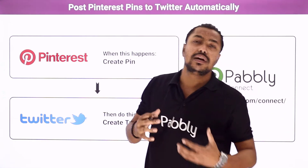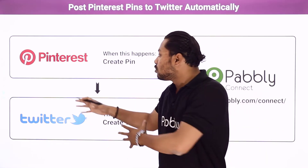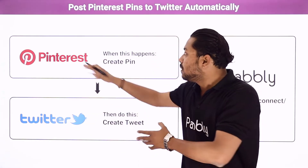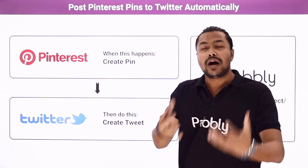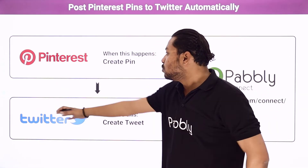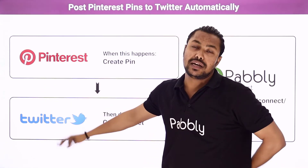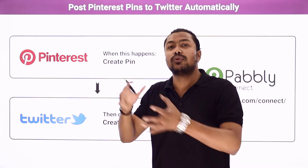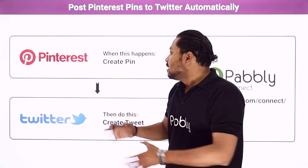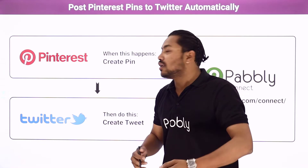Suppose you're a person who posts a lot on Pinterest and you also have a lot of followers on Twitter. You're posting the same thing to both Pinterest and Twitter. To reach different types of people — some use Twitter but not Pinterest, and vice versa — you have to post on both websites, but it is very time-taking and requires a lot of effort.